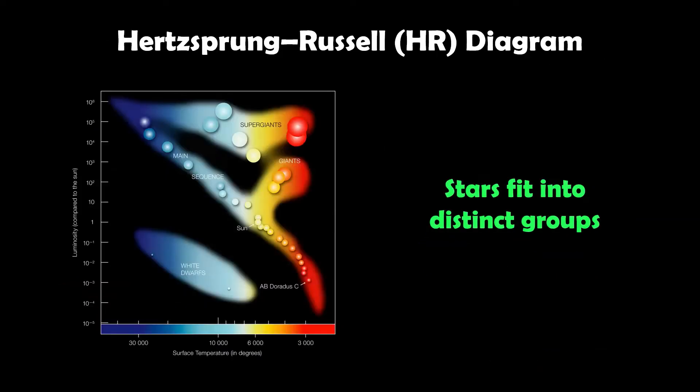When you do that, you get quite distinct groups of stars jumping out. Each star will fall somewhere on the HR diagram, and it helps classify what sort of star it is. You have your main sequence, a diagonal down the middle, your giants and red giants in the upper right, and white dwarfs in the lower left.